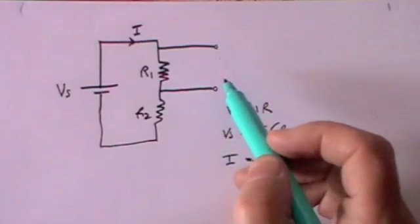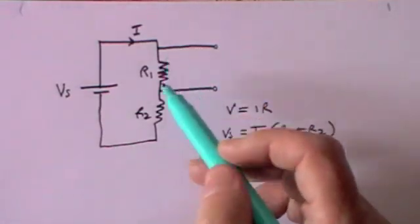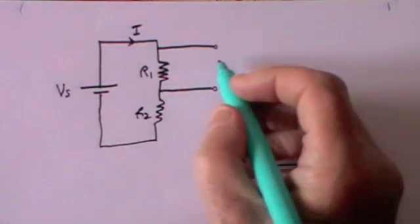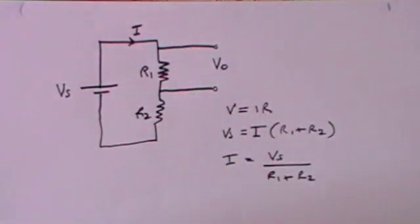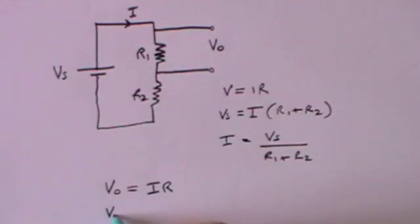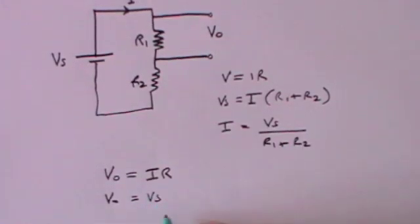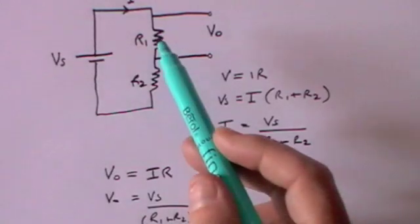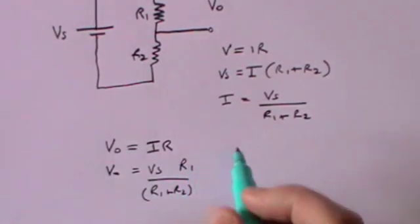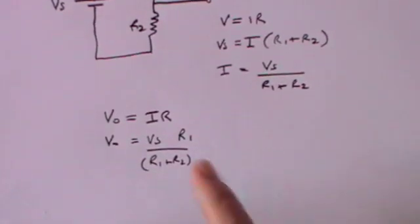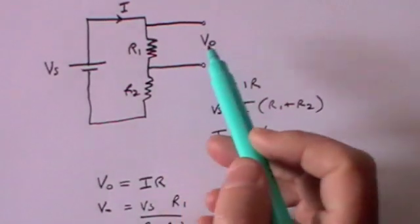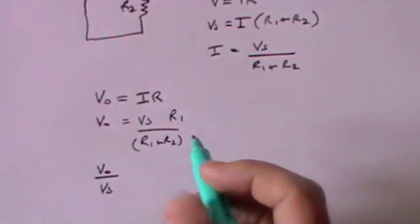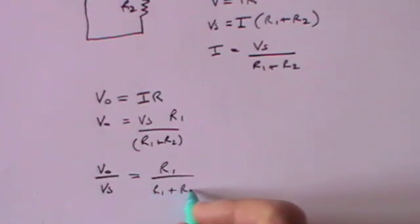If I take a voltmeter and put it across the two terminals of R1 — measuring the voltage drop across that resistance — and call that V0 (the output voltage), then V0 equals I times R1. Substituting the current, V0 equals (Vs over R1 plus R2) times R1. Dividing both sides by Vs, we get that V0 divided by Vs — the output voltage compared with the source voltage — equals R1 over R1 plus R2. That is called a potential divider.